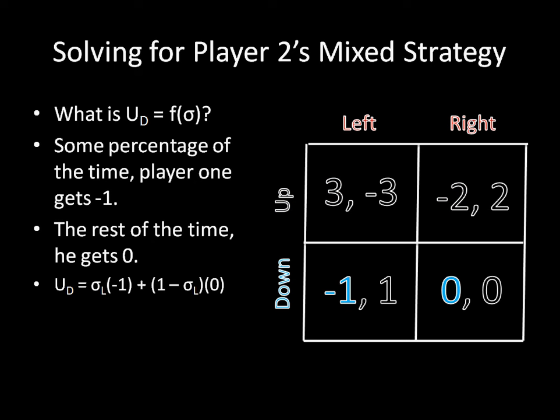Then we do the same thing with the utility for playing down. Using that same sigma l to represent the probability that player two plays left, we have player one earning negative one some of the time and zero the rest of the time. And if any of this isn't clear, you can click on the link on your screen to take you back to the algorithm video.